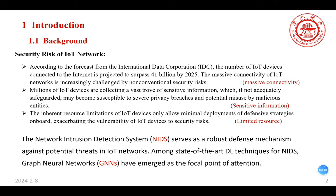The IoT network is increasingly challenged by unconventional security risks. The network intrusion detection system serves as a robust defense mechanism against potential threats in IoT networks. Among state-of-the-art deep learning techniques for NIDS, graph neural networks have emerged as the focal point of attention.